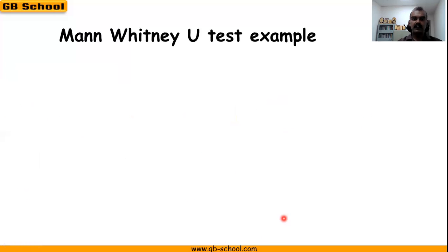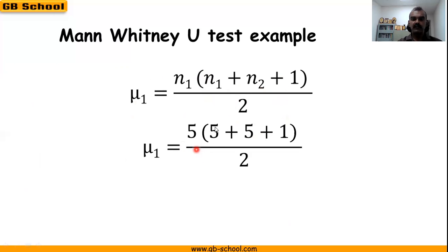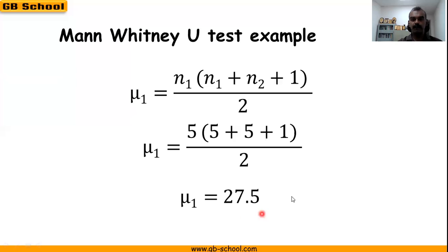Next we find mu1 using the formula: n1 multiplied by (n1 plus n2 plus 1) divided by 2. So it is 5 multiplied by (5 plus 5 plus 1) divided by 2, giving mu1 as 27.5.